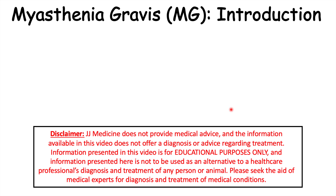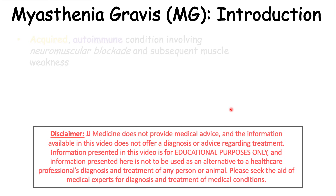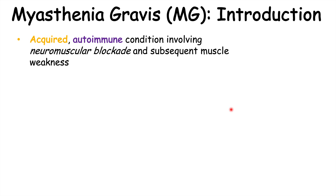Hi everyone, this lesson is on the condition known as myasthenia gravis. Myasthenia gravis is an acquired autoimmune condition involving neuromuscular blockade and subsequent muscle weakness.